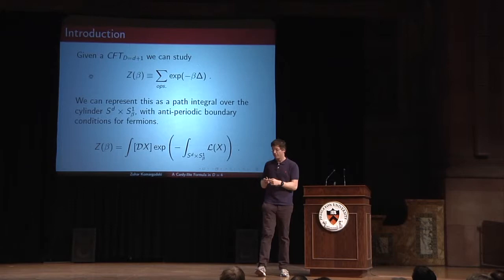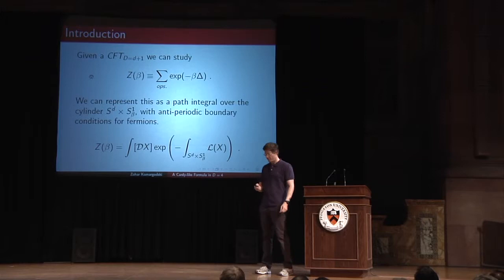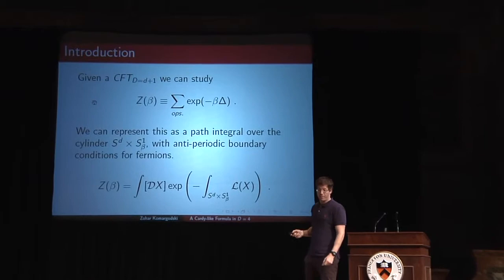You can also study the sum with minus one to the F, which is very important in various contexts, including in non-supersymmetric conformal field theories. So depending on the boundary conditions on the circle, you can study one or the other sum related by minus one to the F.